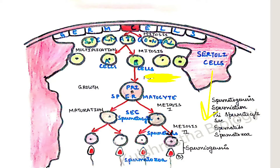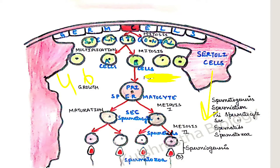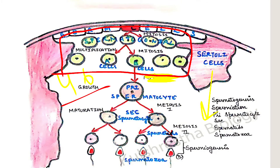The germ cells undergo mitosis and form many spermatogonial cells. These spermatogonial cells are now known as spermatogonial cells. They then divide mitotically to form A cells and B cells. The chromosome number in mitosis remains the same — that is 46. The A cells behave as stem cells — they keep dividing again and again to form new cells.